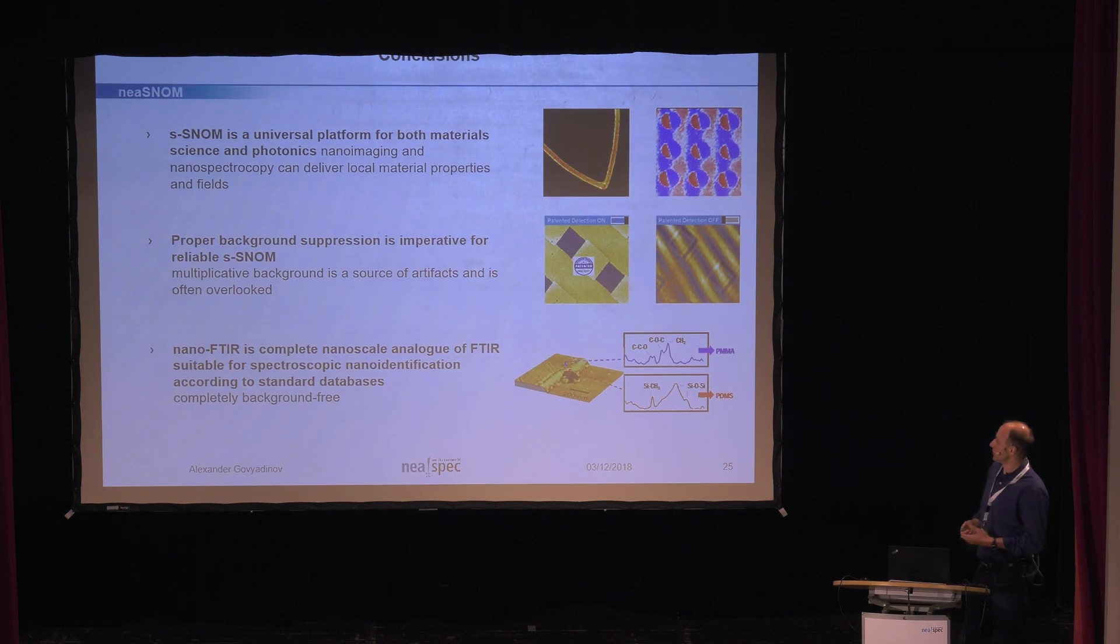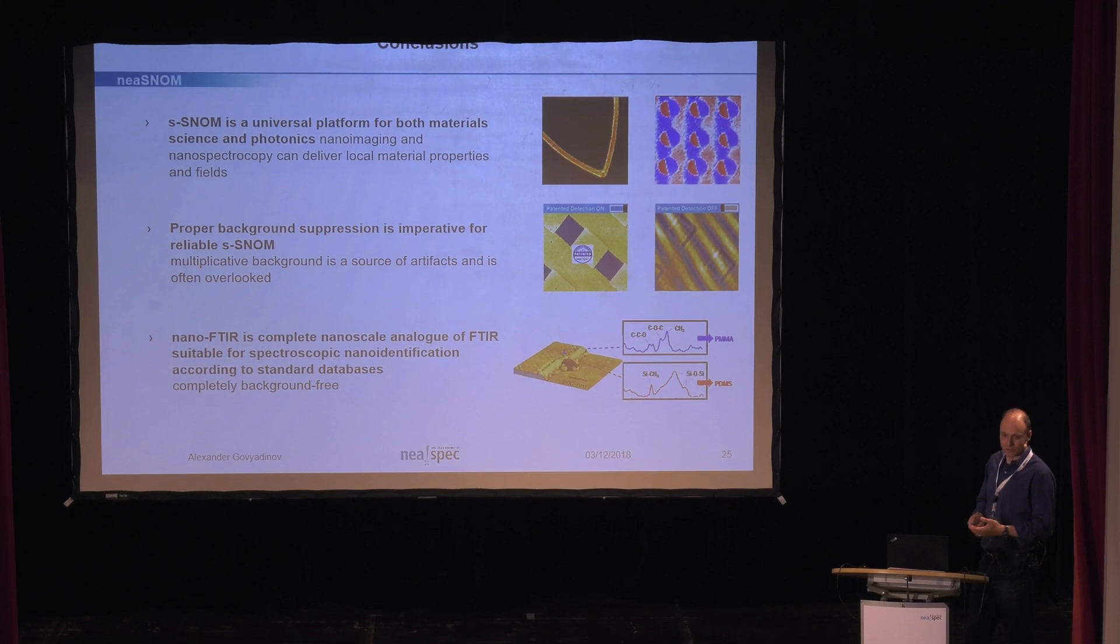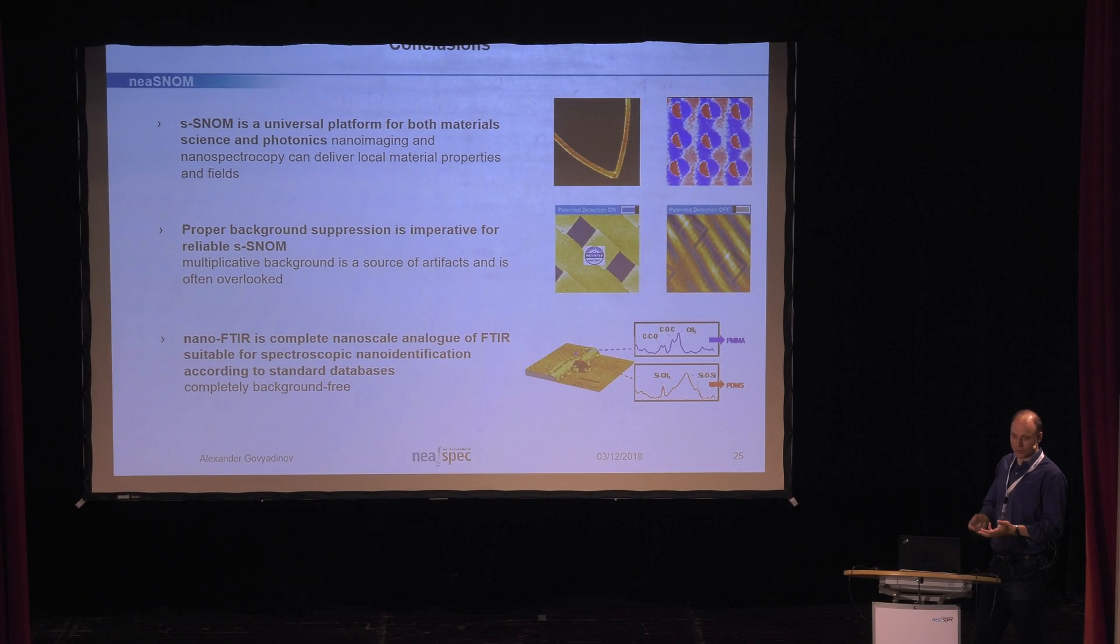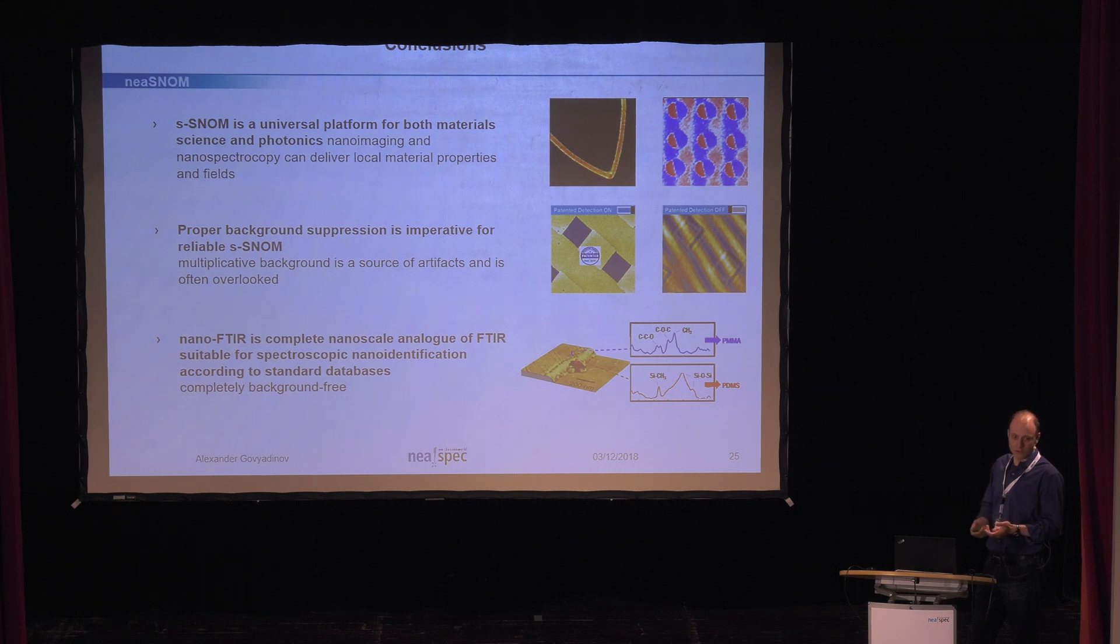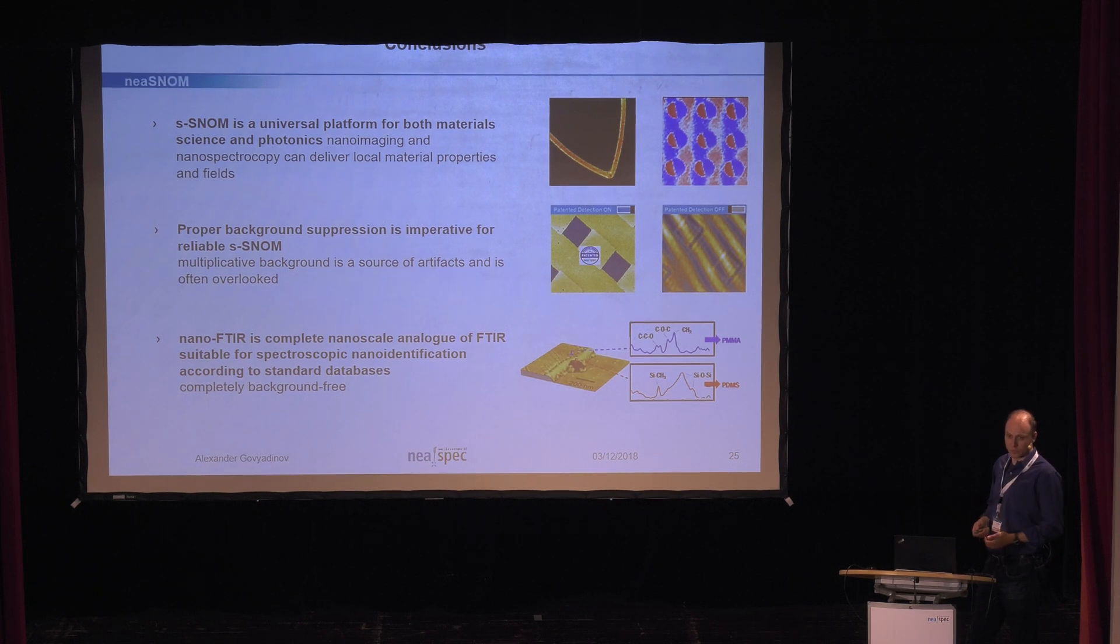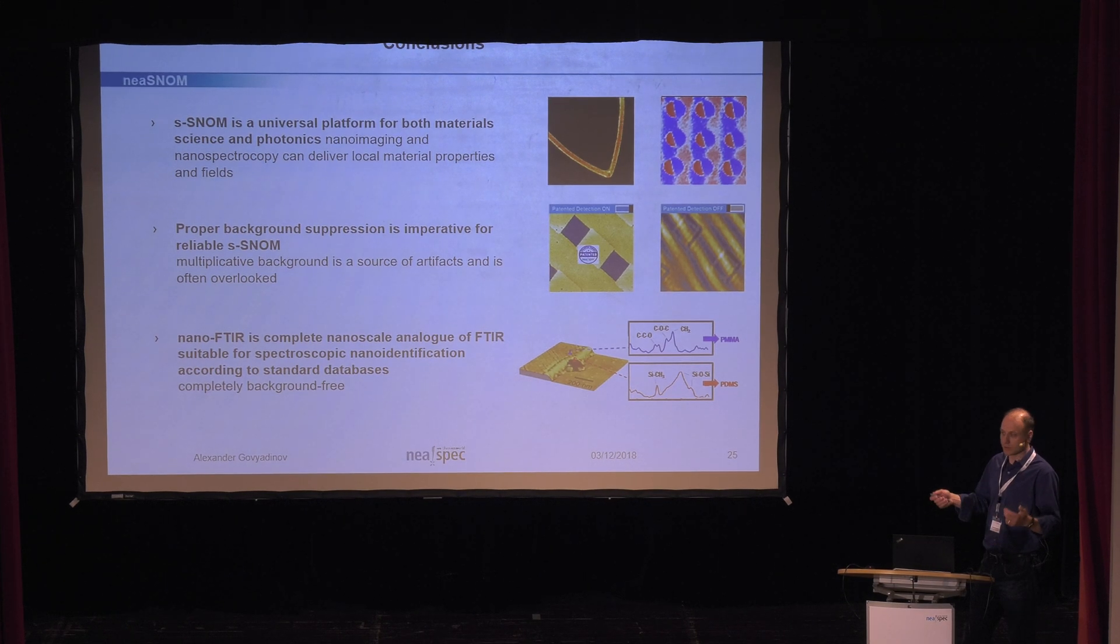That brings me to the, essentially, conclusions. So, I hope that I convinced you that SNOM is a universal platform which can be used for material sciences and for field mapping. Andy will follow up with more applications, how you can use it, where, and so on. Then, I also hope I convinced you that it's important to properly suppress the background. If the background is not suppressed, you'll get the image, or you can get image artifacts. And, finally, there's a thing which is called nano-FTIR, and it can be utilized for material identification at the scale of 10 nanometers. So, thank you very much. That brings us to the questions.